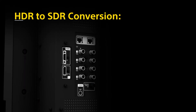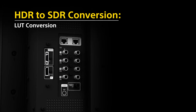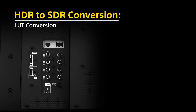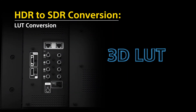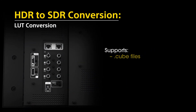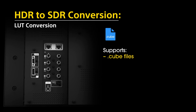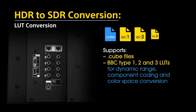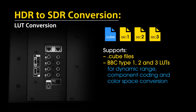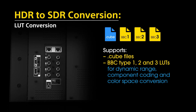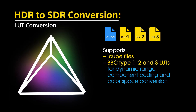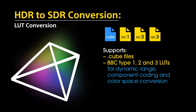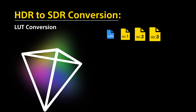The PVM X conversion license can perform HDR to SDR conversion in three different ways. One option is to use a 3D LUT or lookup table. The PVM X monitors support cube files as well as BBC type 1, 2, and 3 LUTs for dynamic range, component coding, and color space conversion. Our tetrahedral LUT interpolation ensures the highest level of processing for the best possible final results.